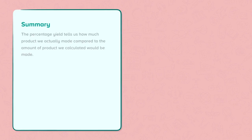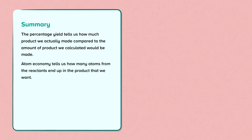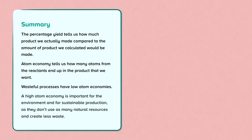To summarise: the percentage yield tells us how much product we actually made compared to the amount of product we calculated would be made. Atom economy tells us how many atoms from the reactants end up in the product that we want. Wasteful processes have low atom economies. A high atom economy is important for the environment and for sustainable production, as they don't use as many natural resources and they create less waste.